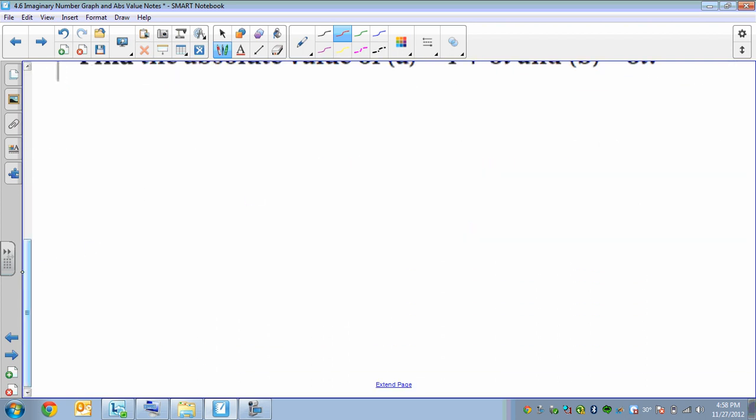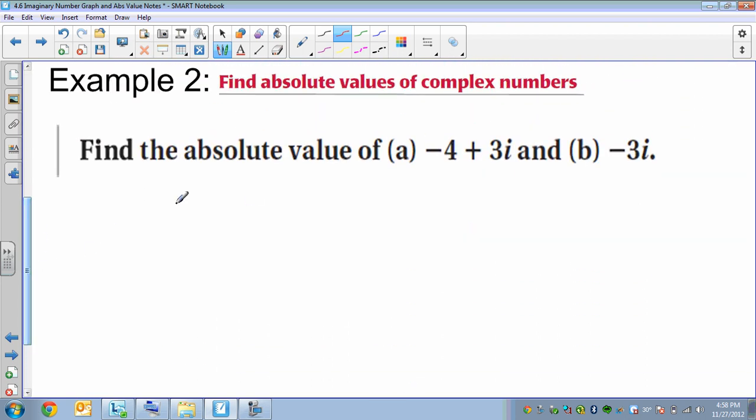So our first problem has this as our complex number. So our a part is there, and our b part is there. Our a part is the real part, that's the number without the i. Our b part is our imaginary part, that's the number with the i. So now we just fill in, we've got to have a squared around it.